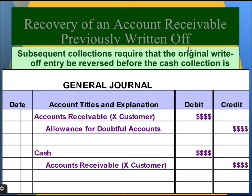Recovery of account receivable previously written off: subsequent collectibility requires that the original write-off entry be reversed before the cash collection is recorded. Some customers at a later point in time revert and pay their bills. The first entry reinstates accounts receivable (debit) and allowance for doubtful accounts (credit); the second entry records the cash received by debiting cash and crediting accounts receivable.